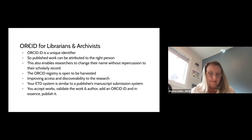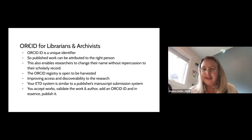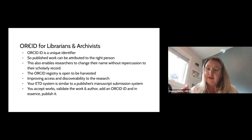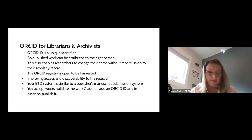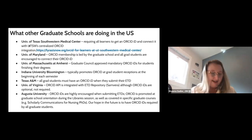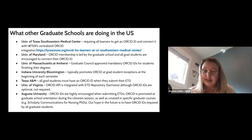All the data in the ORCID record has three privacy settings. You can set each line item of data to fully public, only for trusted organizations the researcher decides, or private. There are many US universities doing great work with ORCID right now with different policies and different levels of integration with their ETD systems.